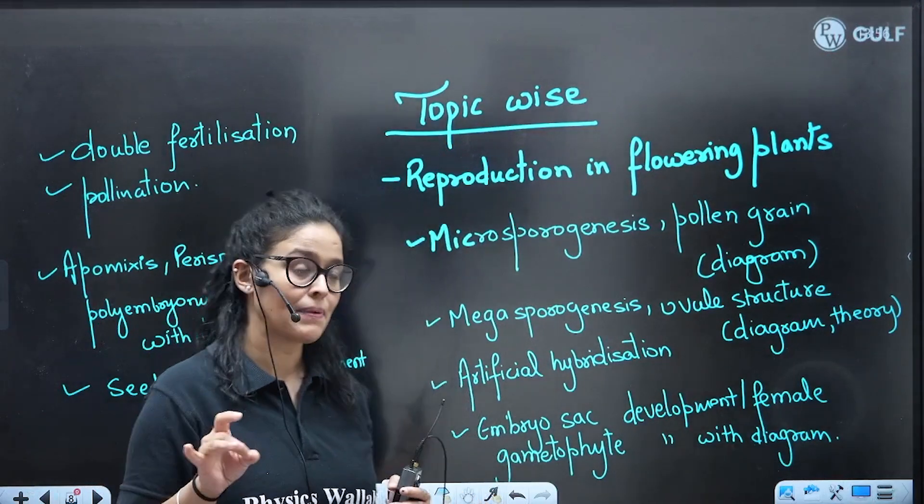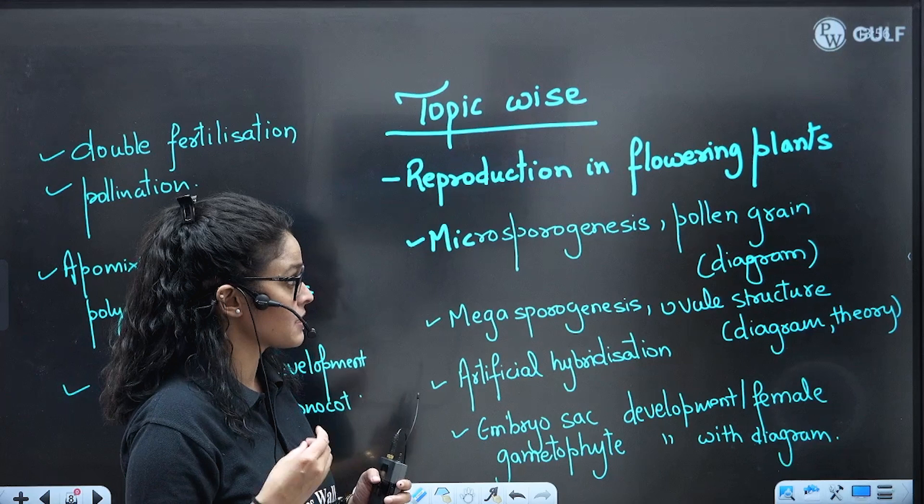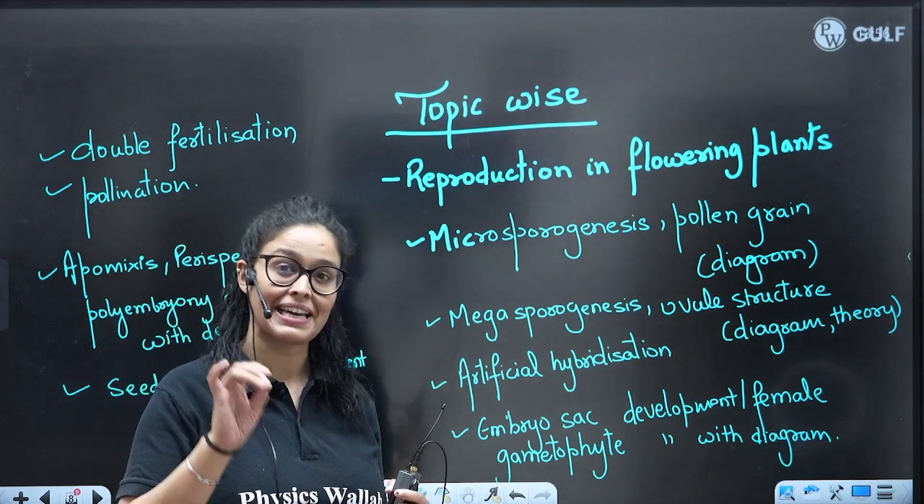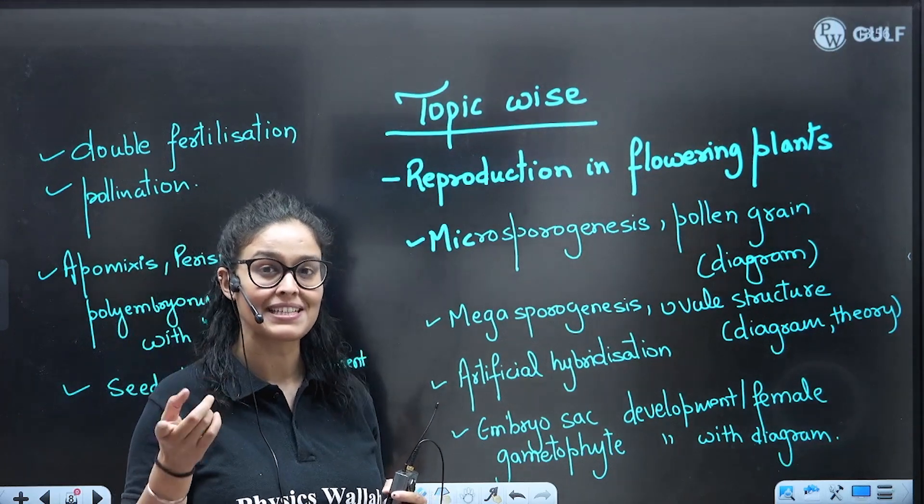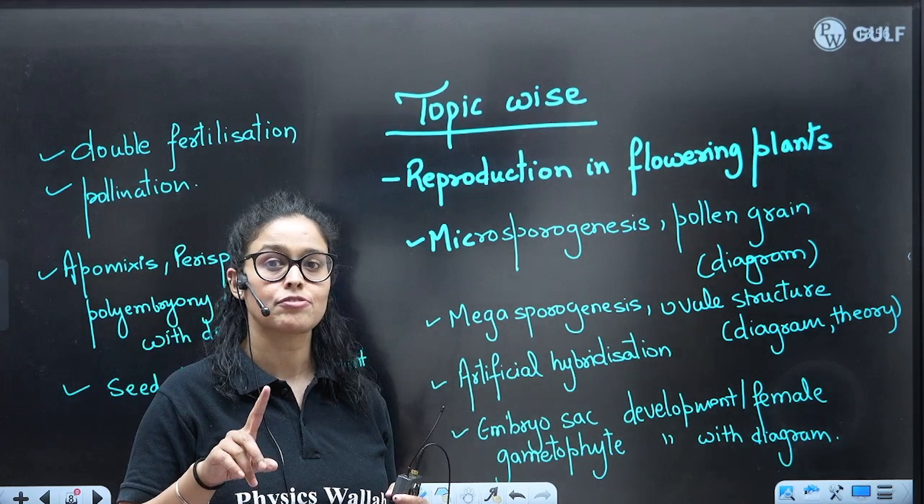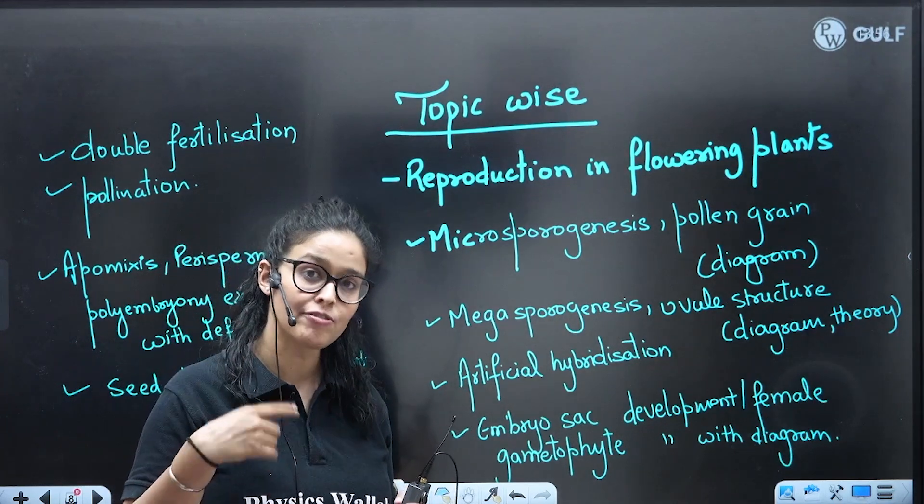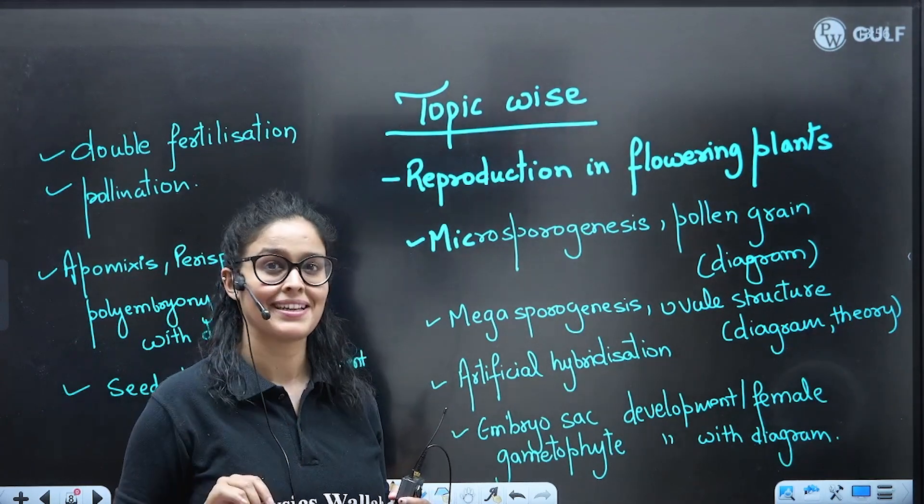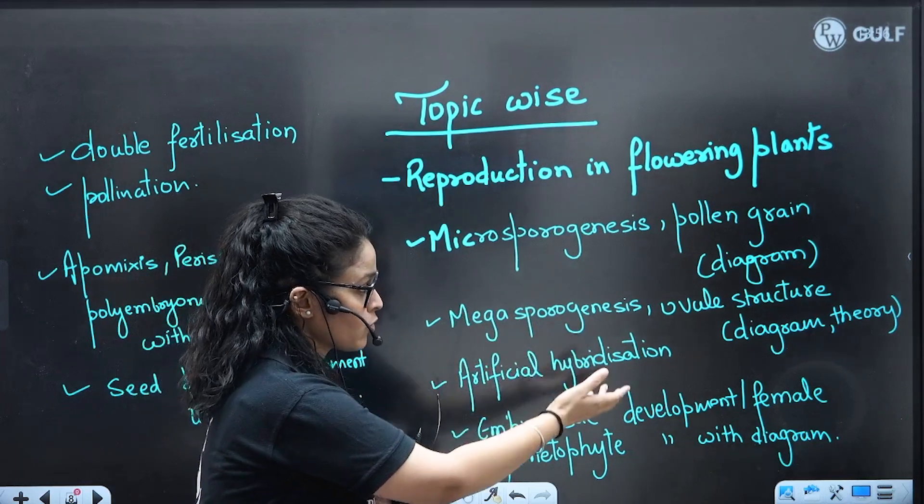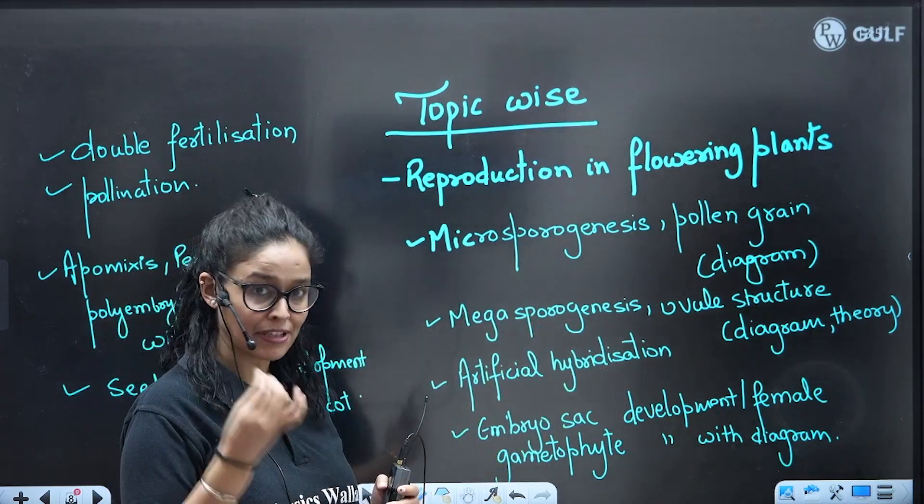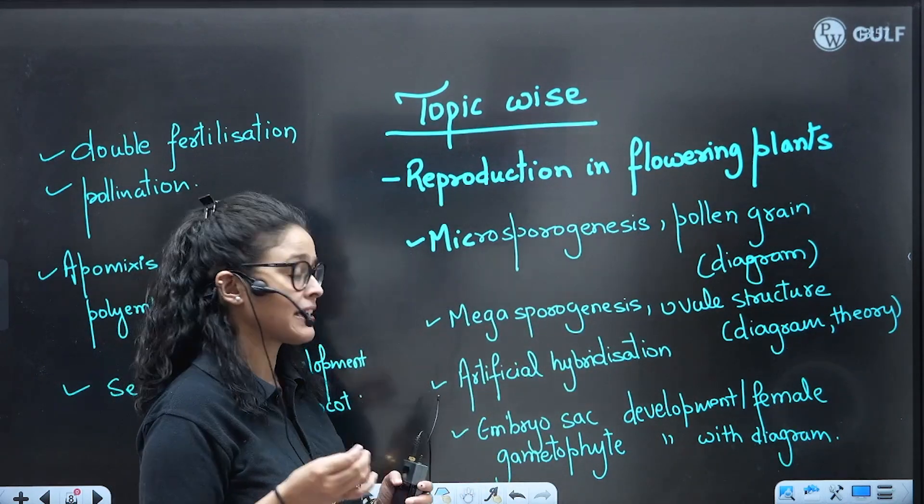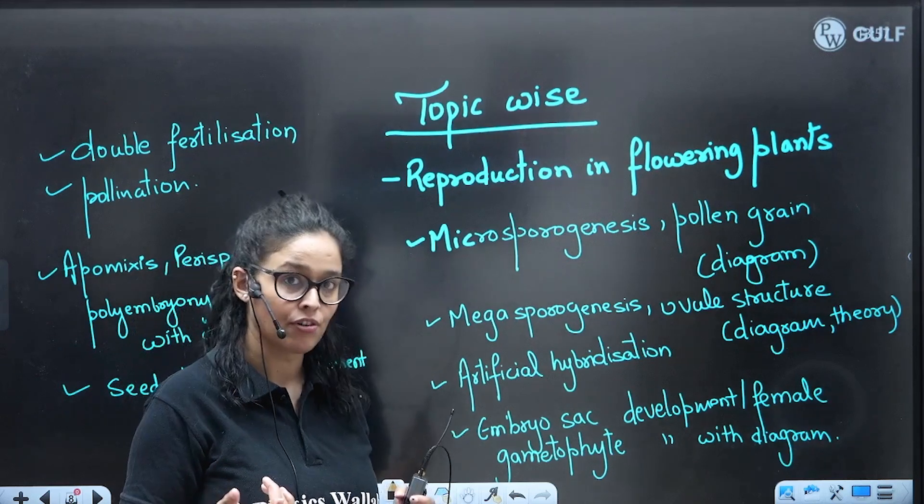First is Reproduction in Flowering Plants. These topics - microsporogenesis, pollen grain - very important. Their diagrams are very important because if we analyze last 5 to 7 years question papers, you will find more questions from these topics in diagram form. Megasporogenesis, ovule structure is important diagram with theory. Artificial hybridization, they might ask you the definition.